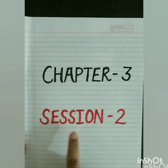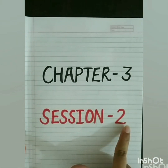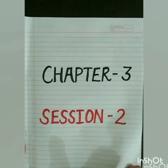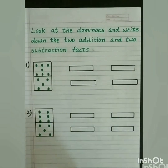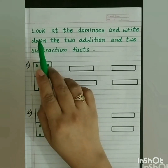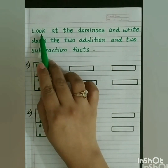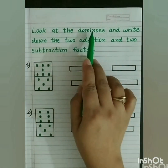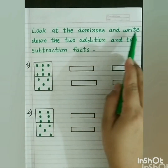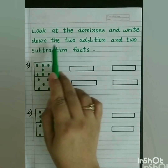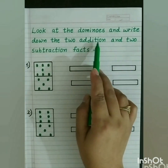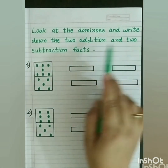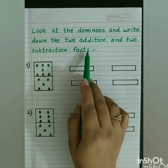Chapter 3, Session 2. Our next question is: look at the dominoes and write down the 2 addition and 2 subtraction facts.